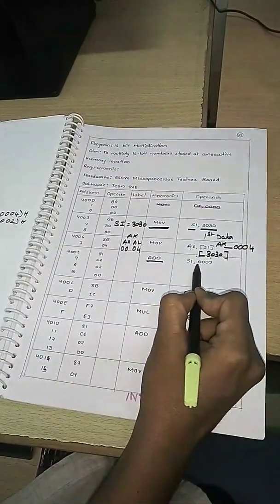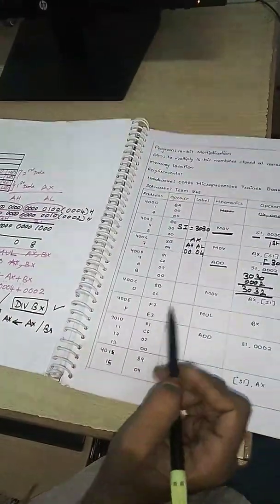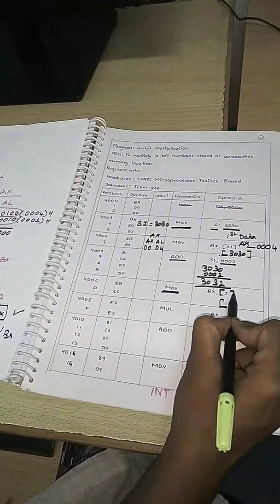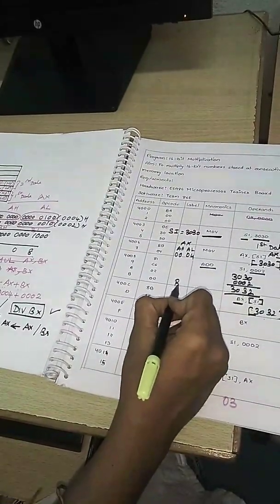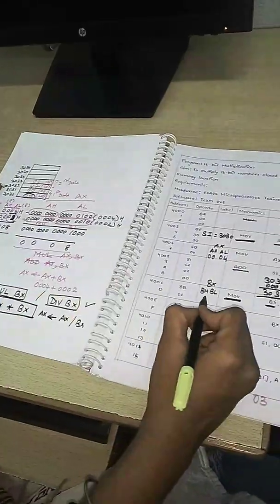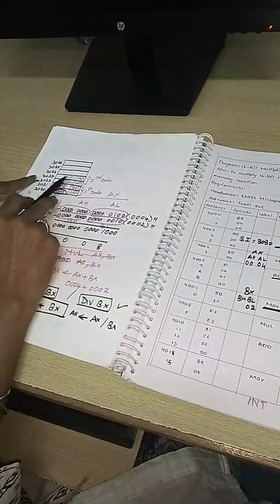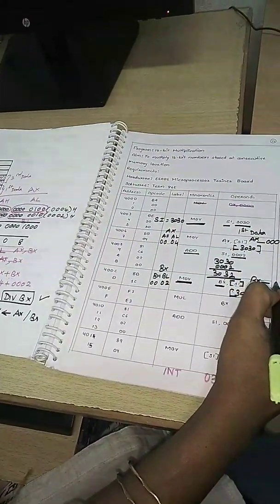Now what I am going to do? Add 0002 to SI. What is my SI value? 3030. If I add 0002 to it, I get the address where my second data is sitting. Now SI points to 3032. Move the data from the memory location pointed by SI to register BX. You know BX is nothing but BH and BL. The first byte from 3032 goes to BL, it automatically increments, and the second byte goes into BH. Now BX is holding my second data, which is 0002.